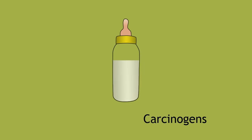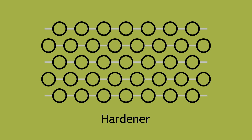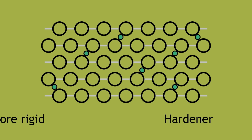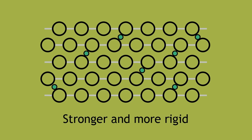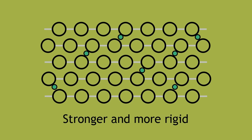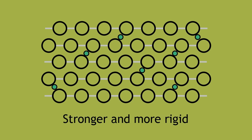A hardener has the opposite effect on a polymer. Introducing a hardener, or a cross-linking agent, makes a polymer stronger and more rigid. We can think of a cross-linking agent as a bridge. It holds the polymer chains in place and does not allow for much movement of the polymers.